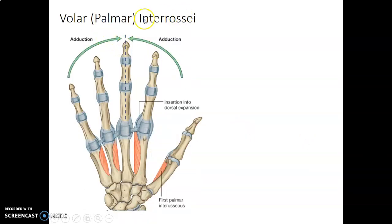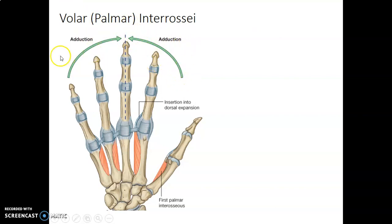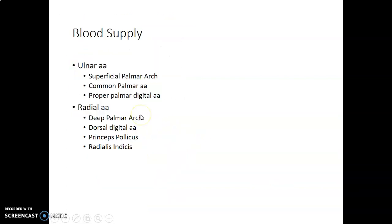The palmar interossei cause adduction — remember PAD: Palmar interossei ADduct. Adduction is when the digits move towards the line of reference, which is the third digit. You can see the palmar interossei inserting onto the dorsal expansion.